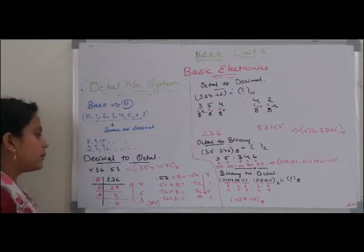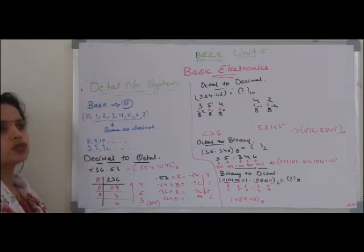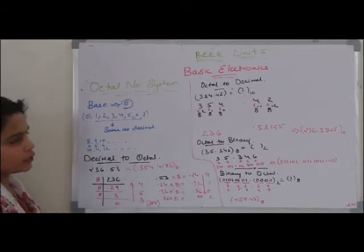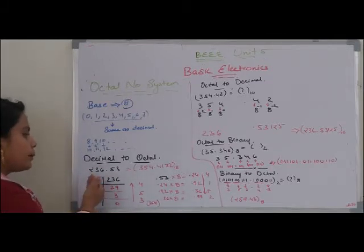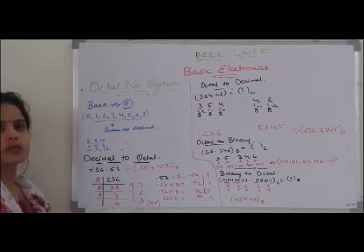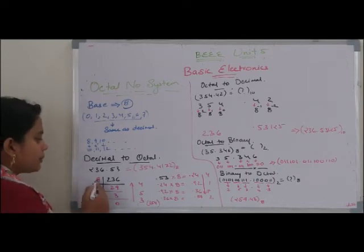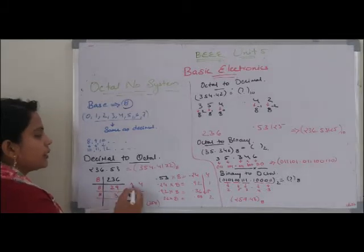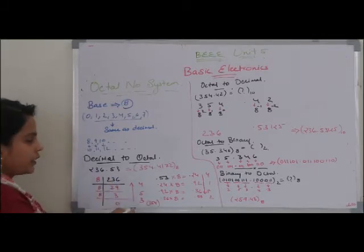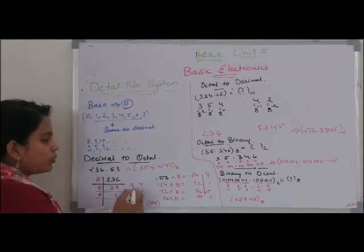What did we do in the double-double method? We continuously divided our decimal number by 2 and noted the remainders. The process is the same here, with the difference being that instead of dividing by 2, we divide by 8. We note the remainders and continue until the quotient becomes 0, just like the double-double method.